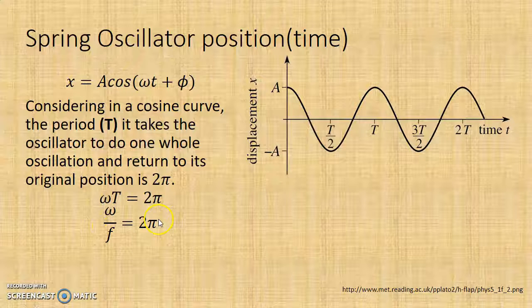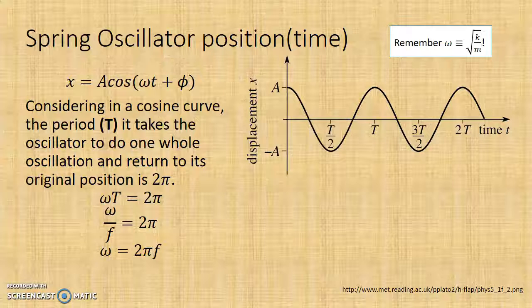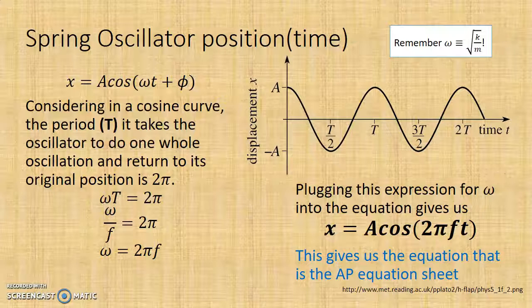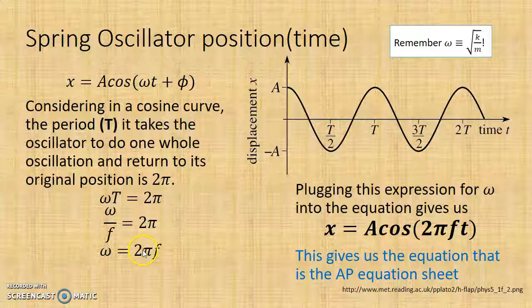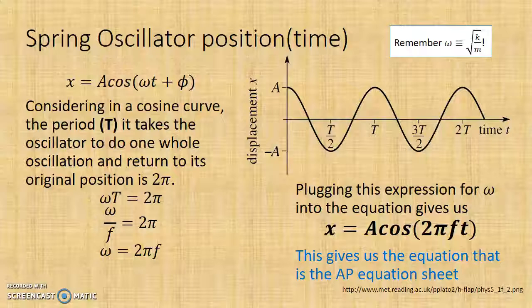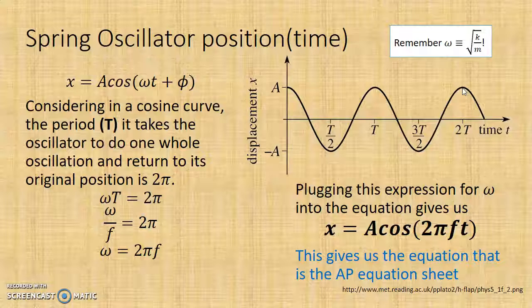Considering that the period capital T is the inverse of frequency, I can say omega over frequency equals 2 pi. And then I can just say omega equals 2 pi times the frequency, how many waves per second there are. Just remembering that omega is this k over m, that comes in helpful. So then if I plug all that into the original expression up here, then we have the amplitude cosine. Instead of omega, I have 2 pi f, and then I have t. This is the equation that they have on the AP equation sheet. It's really, there's not too much you can do with it other than it tells you the position of an oscillator as a function of time. And it makes sense that it's a cosine function, right? Because sine, cosine, these are the only functions that are harmonic, that recur over time, keep on going back and forth to the same place.